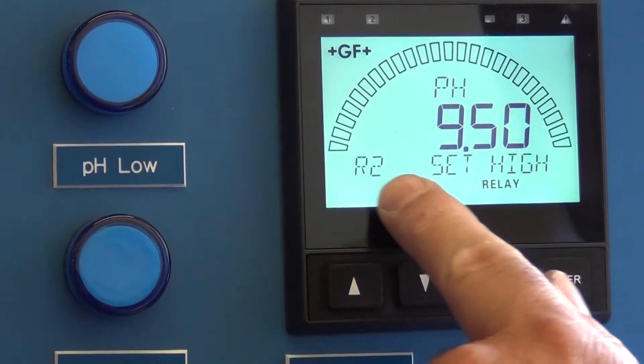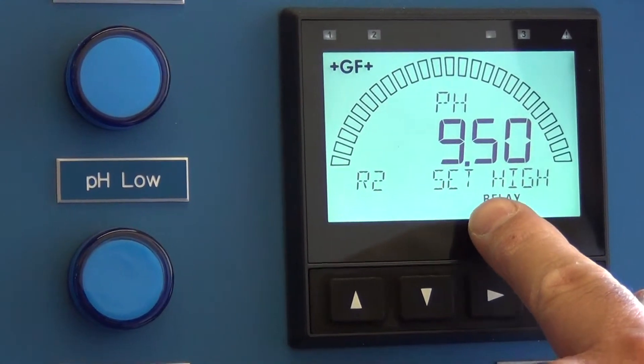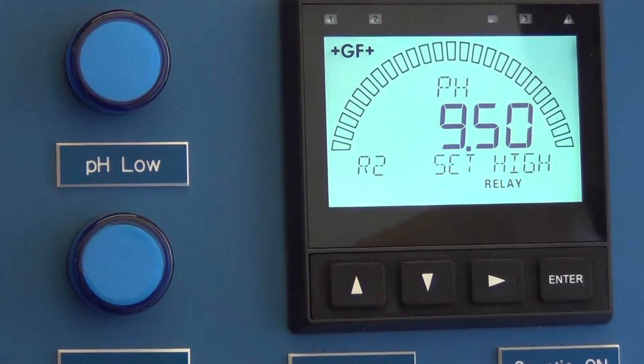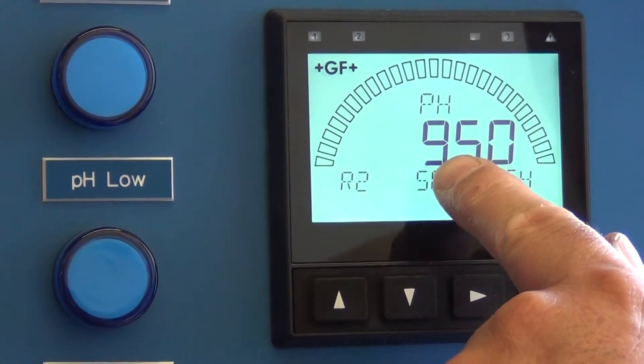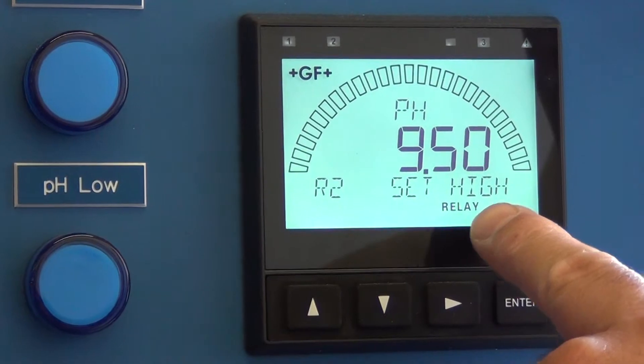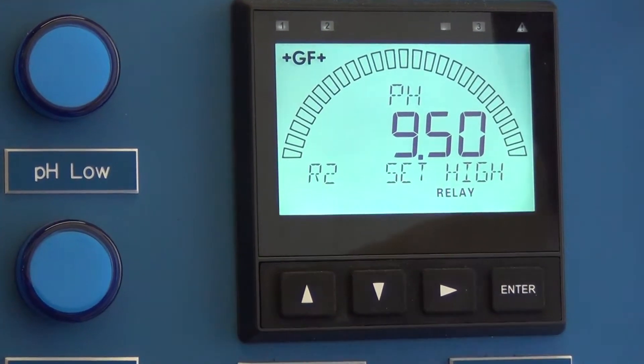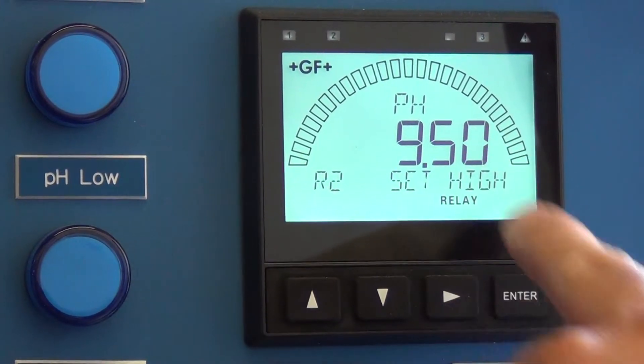So we want to go to this screen. Now if we wanted it to begin pumping acid any time the pH is above a 9, we go to this screen.